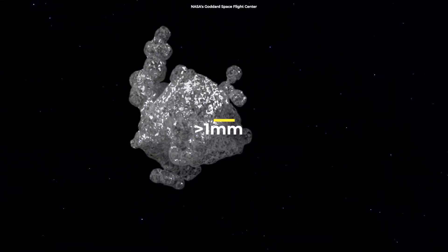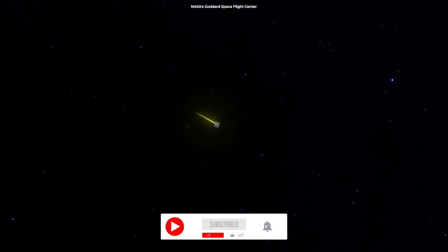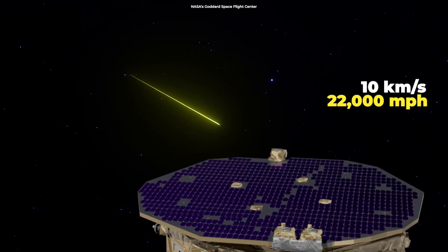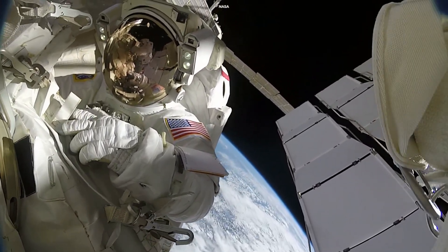Meteoroids are usually less than a millimeter in size, but as tiny as they are, they can fly as fast as 10 kilometers per second or 22,000 miles per hour and cause significant damage to spacecraft or even astronauts during EVAs.